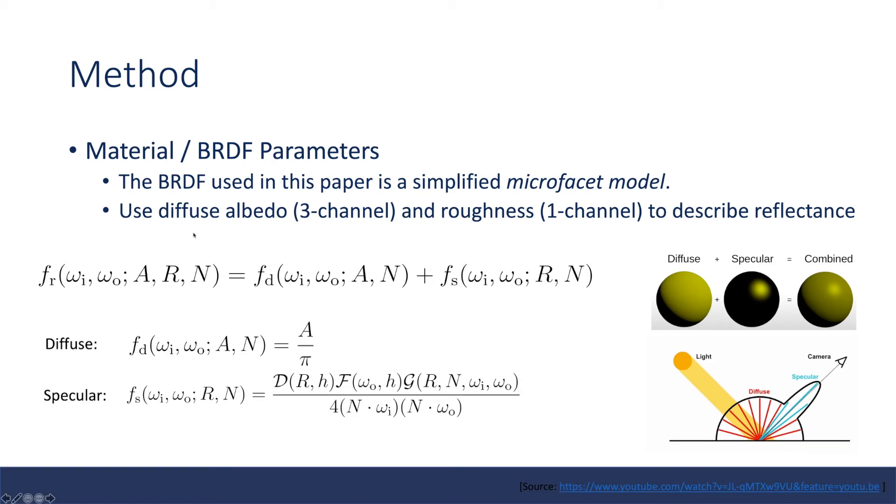The BRDF used in this paper is a simplified microfacet model. Basically, the authors are using a diffuse albedo (three channel property) and roughness (one channel) to describe the reflectance.